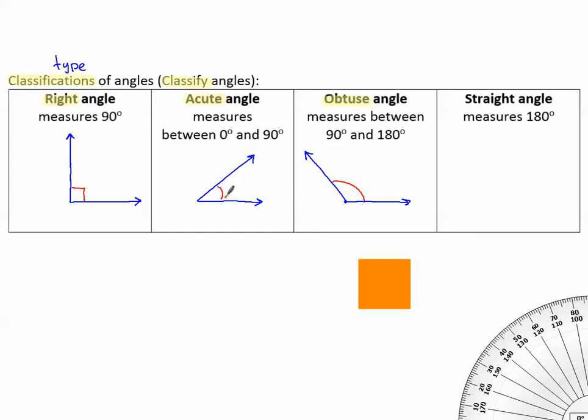A straight angle measures exactly 180 degrees. And a straight angle looks like a straight line. Another way to think of it is two rays that go in opposite directions. When I draw the arc for this, I usually label it with a 180 degree measure.